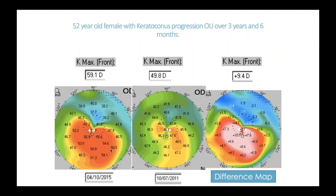Here's a patient in their 50s who presented at 52 with a central K of 49.8 in 2011. Three and a half years later, in 2015, they came back at 59.1 — worsened by 9.4 diopters. So we really want to identify and treat these patients, not just tell them they're not going to progress.